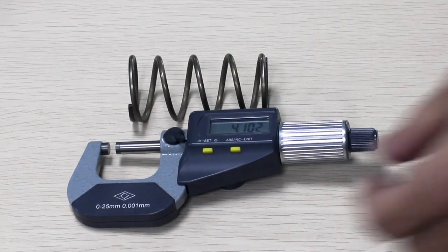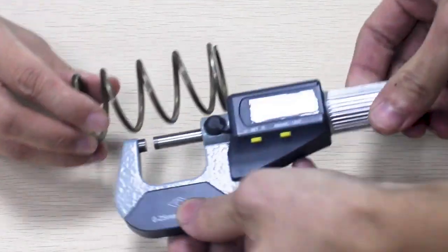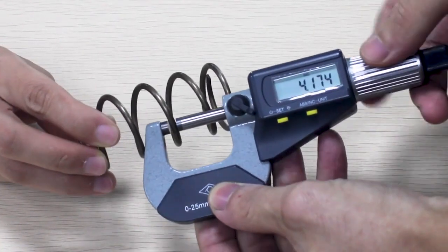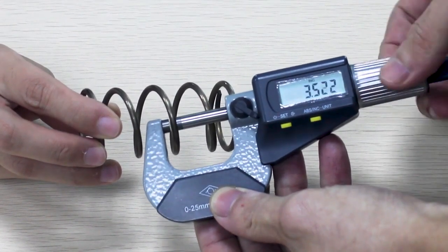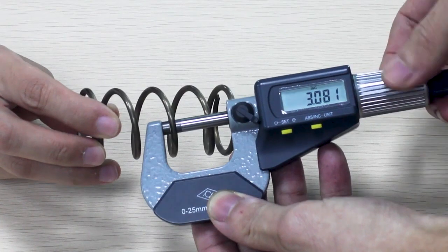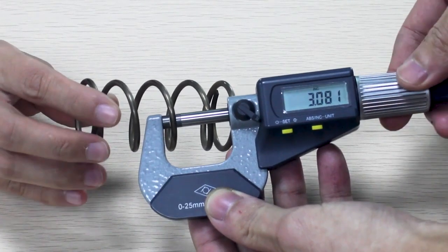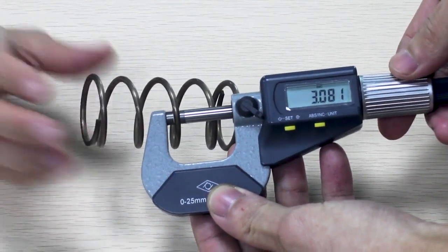First, we want to measure the wire diameter. Common practice to measure the wire diameter in two different spots using a micrometer and take the average. For this spring, the wire diameter is 3.081 millimeters.